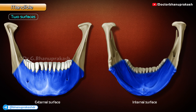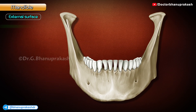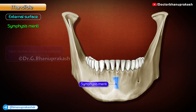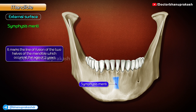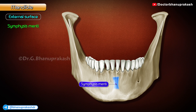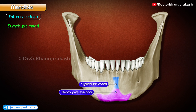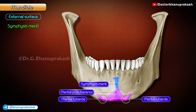The body has two surfaces: an external surface and an internal surface. The external surface presents the following features. Symphysis menti: this is a faint median ridge on the external surface of the body. It marks the line of fusion of the two halves of the mandible, which occurs at the age of two years. The symphysis menti expands below into a triangular elevation called the mental protuberance, forming the point of the chin, the base of which is limited on each side by the mental tubercle.